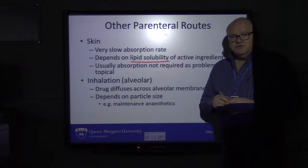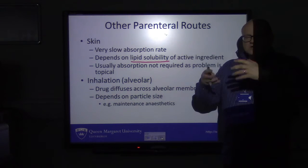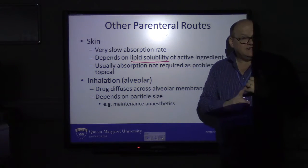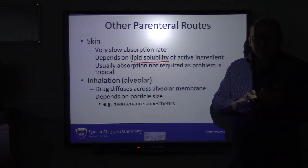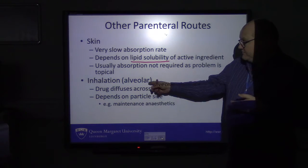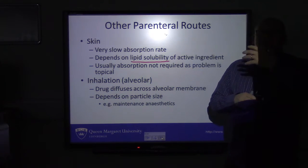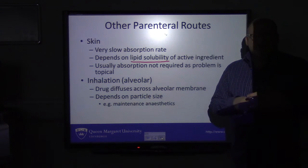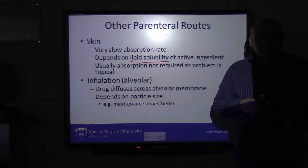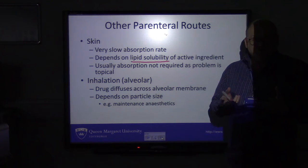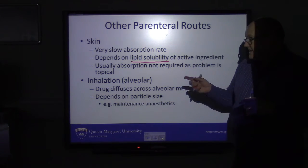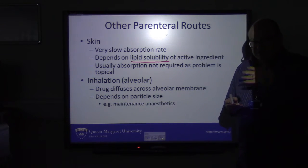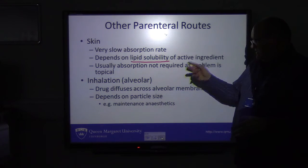Then there's the alveolar route — inhalation. The drug is breathed in and goes into the respiratory tract. Maintenance gaseous anaesthetics are given this way, but also nebulisers and inhalers — a perfect route for those because the inhaled drug has been taken directly into the airways. If you're given something like salbutamol, which is a bronchodilator for the treatment of asthma, it hits the airways and causes relaxation of the smooth muscle. You're not so concerned about absorption in that case because the site of action is the location of administration — the respiratory tract.